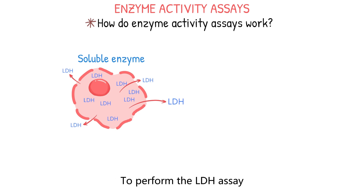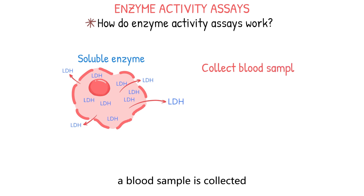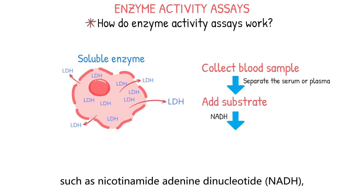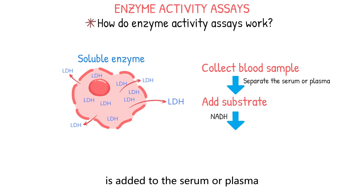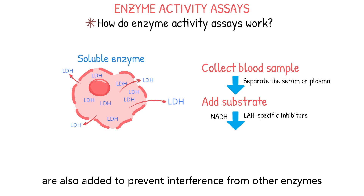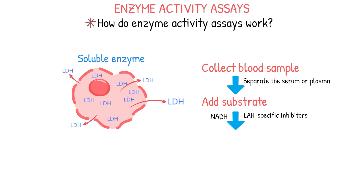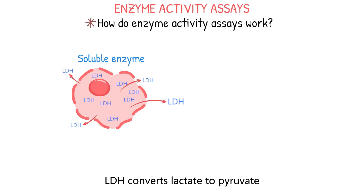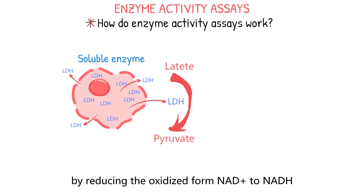To perform the LDH assay, a blood sample is collected and processed to separate the serum or plasma from the cellular components. A substrate such as nicotinamide adenine dinucleotide, or NADH, is added to the serum or plasma. Some other appropriate buffer and LDH-specific inhibitors are also added to prevent interference from other enzymes or substances. The released LDH can be detected by a couple of enzymatic reactions. First, LDH converts lactate to pyruvate by reducing the oxidized form of NAD+ to NADH.